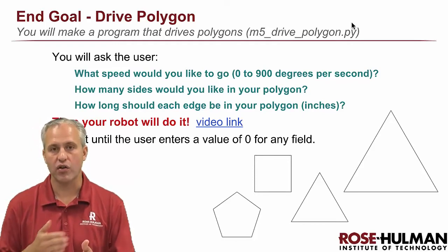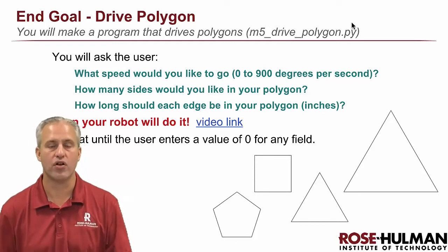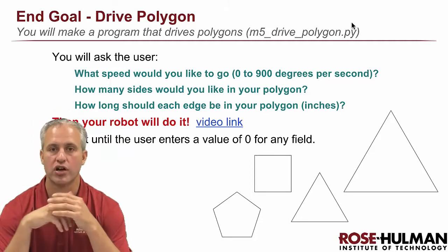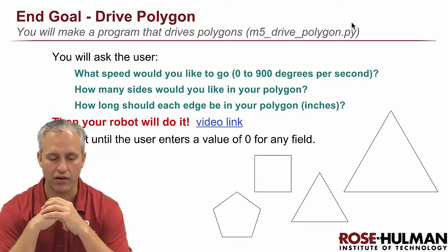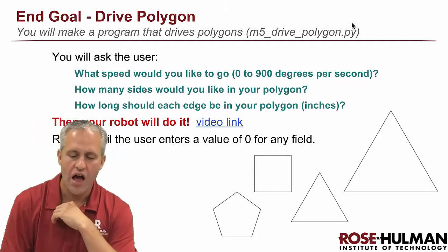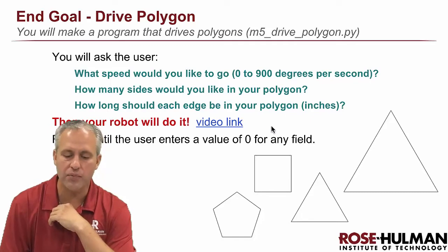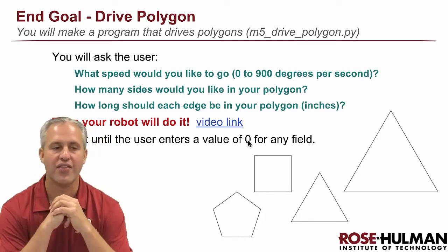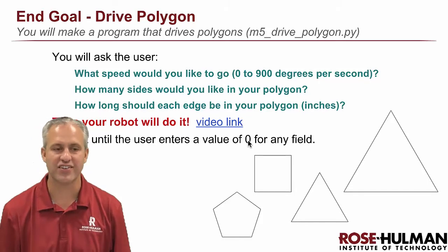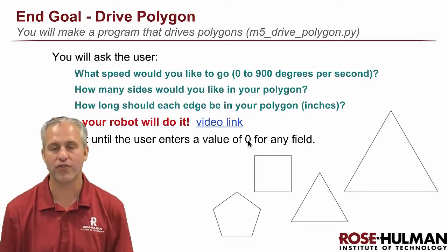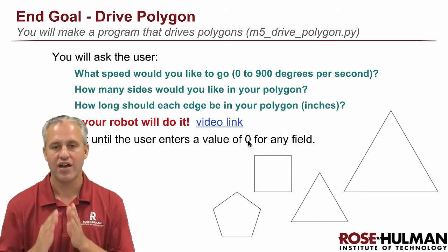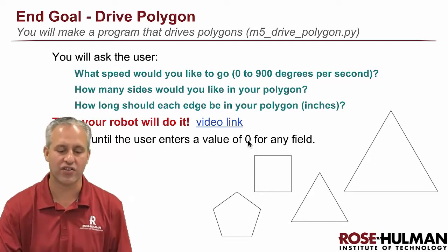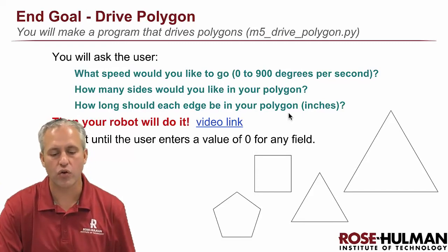There are check-offs along the way — make sure you get each part checked off by a TA or instructor. That program is going to keep going until you enter zero for any field. There are also some special tricks: if you put in negative four for the number of sides, it'll do a square but with right turns. So there are some little things like that.